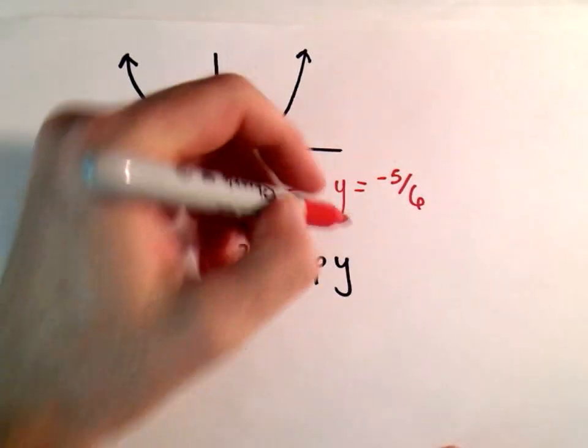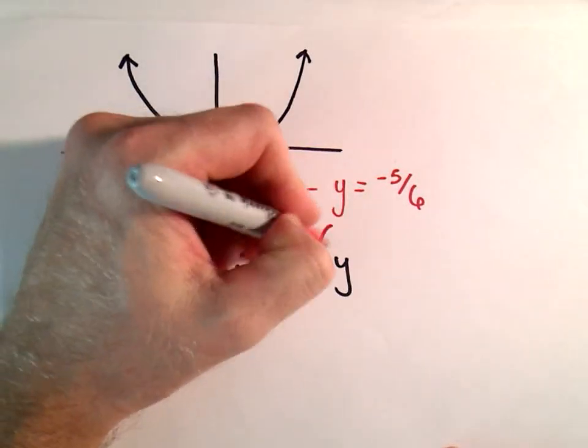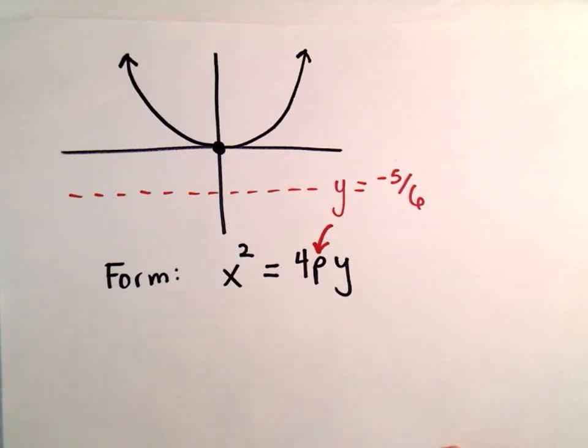And again, the only real value we have to come up with here is the value for p. We just have to deduce the value for p, and then we plug it in and we're done. Really not much else to it.